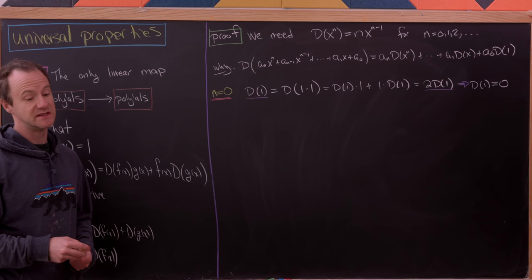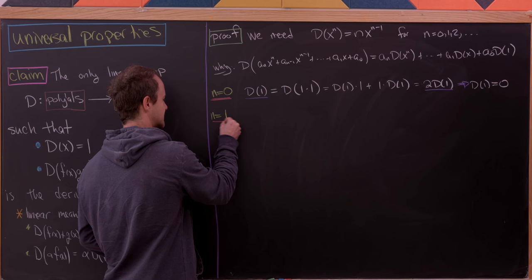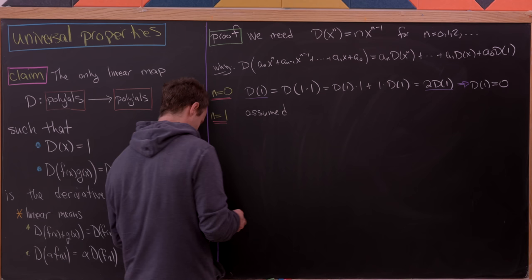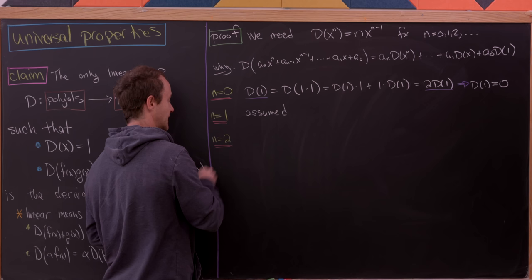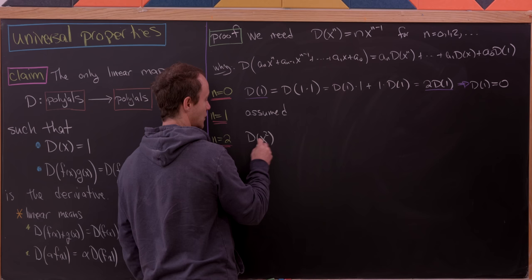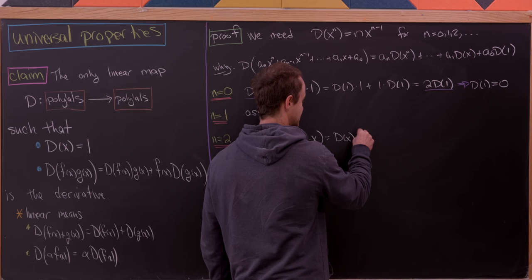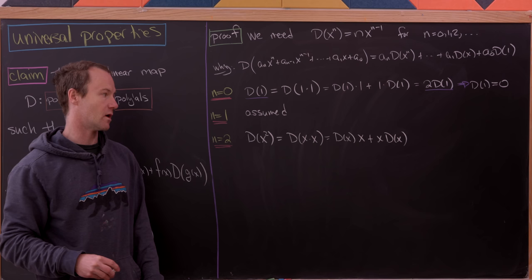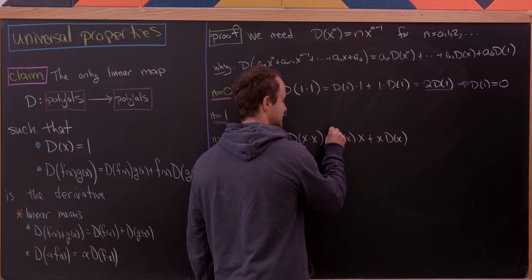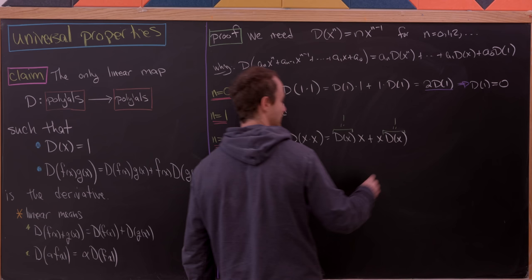We note the n = 1 case is our assumption: d(x) = 1. For n = 2: d(x²) = d(x·x). Applying the Leibniz rule gives d(x)·x + x·d(x). Since d(x) = 1, this becomes 1·x + x·1 = 2x. So the power rule holds for x².